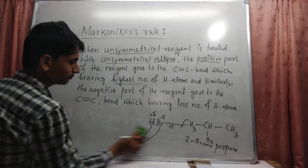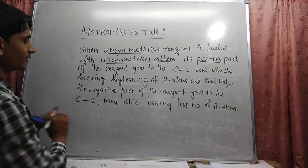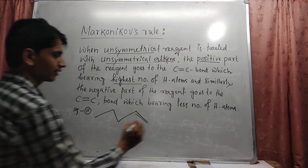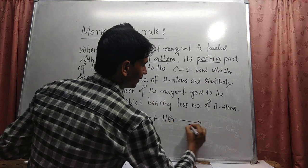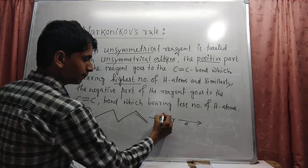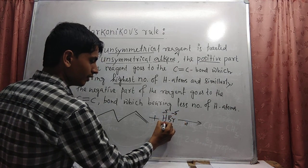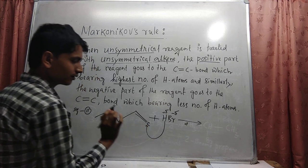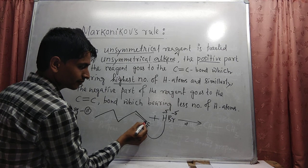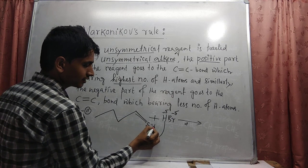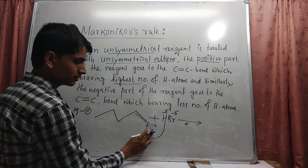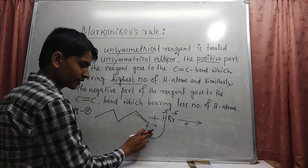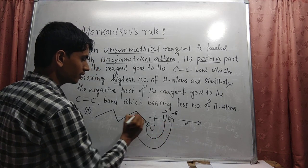Now let's take another example of Markovnikov's addition — Example 2. Suppose another unsymmetrical alkene reacts with HBr. What will be the product? As we know, the positive part of the reagent goes to the carbon-carbon double bond bearing the highest number of hydrogen atoms. At this position, one carbon atom is hidden, so two valences are satisfied, and the remaining valences are satisfied by hydrogen. That's why two hydrogen atoms are present on that carbon, making it the site for the positive part of the reagent where the hydrogen count is maximum.